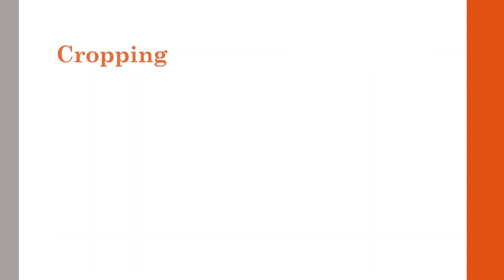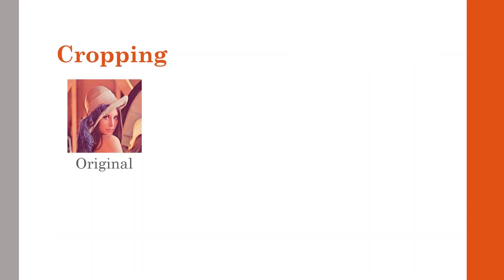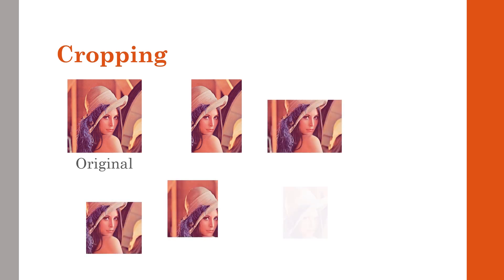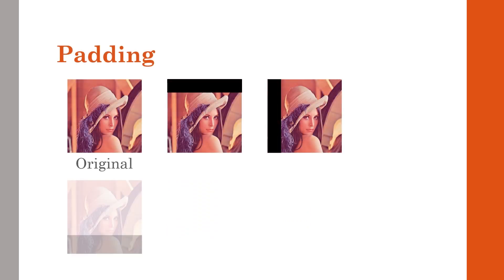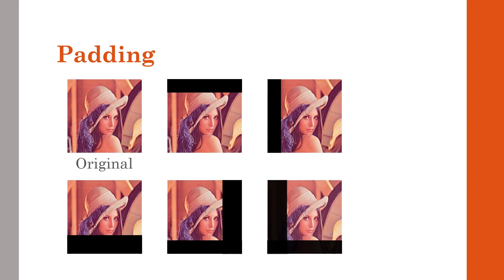First, cropping. We can randomly crop our image with our main object fully or partially visible. Second, padding. It is similar to cropping, but in this the image size will remain the same. We can randomly pad our image with our main object fully or partially covered.